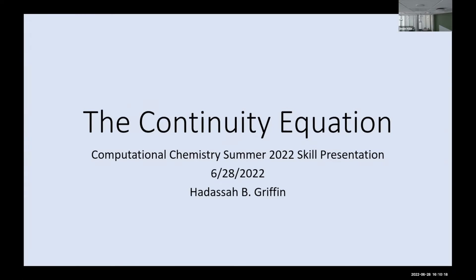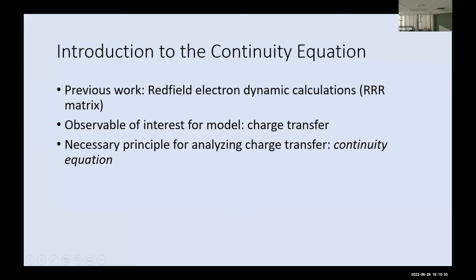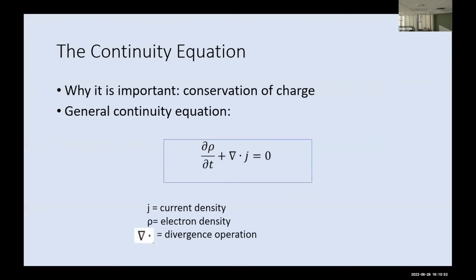We'll be looking at the observables of photoluminescent charge transfer today, starting with charge transfer. An important physics concept related to this is the continuity equation. For context, we talked about Redfield electron dynamic calculations last time and did some calculations with those. One thing you can analyze with that is charge transfer, and we need the continuity equation, which describes how charge is conserved — local charge moves around a larger area.